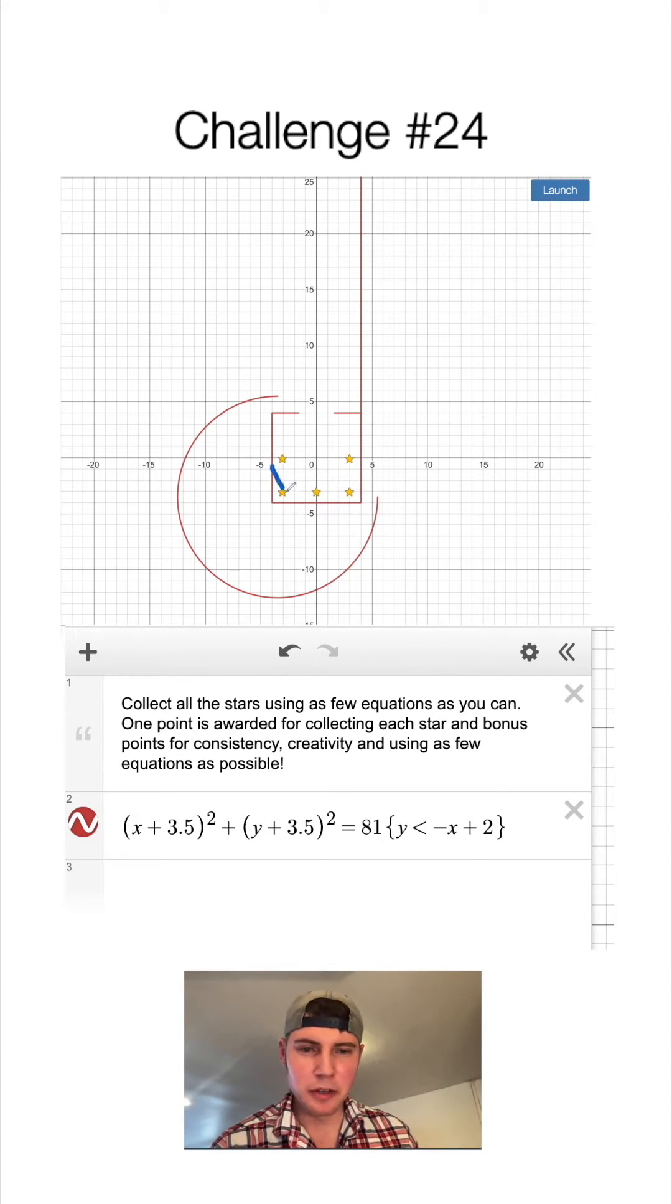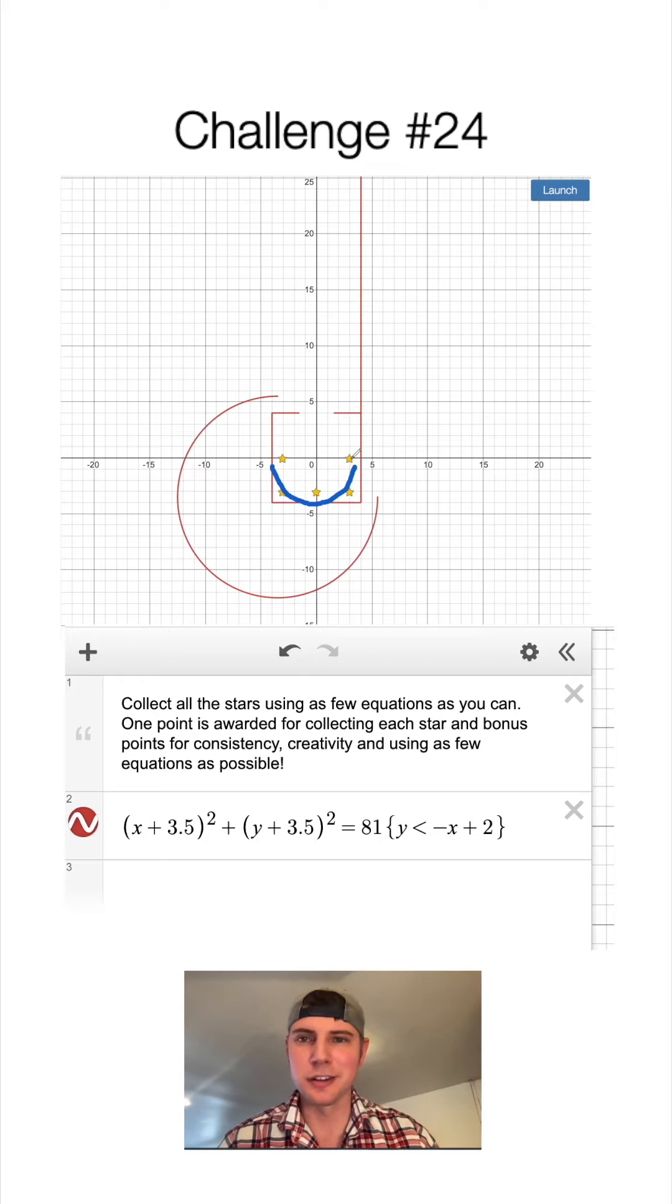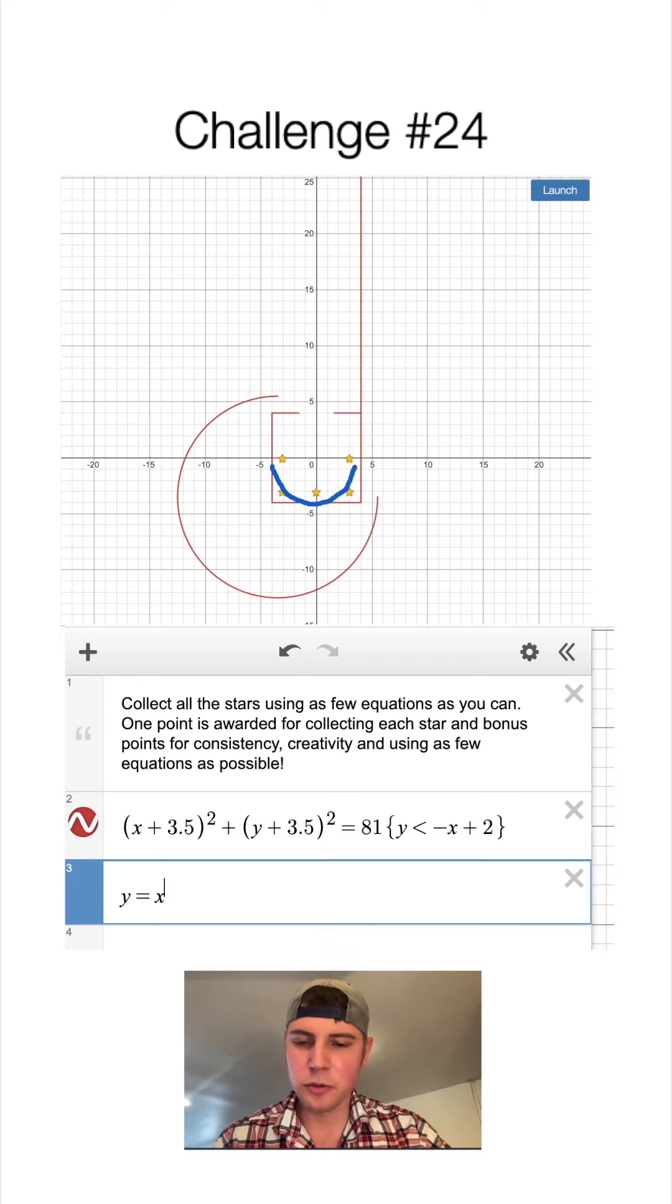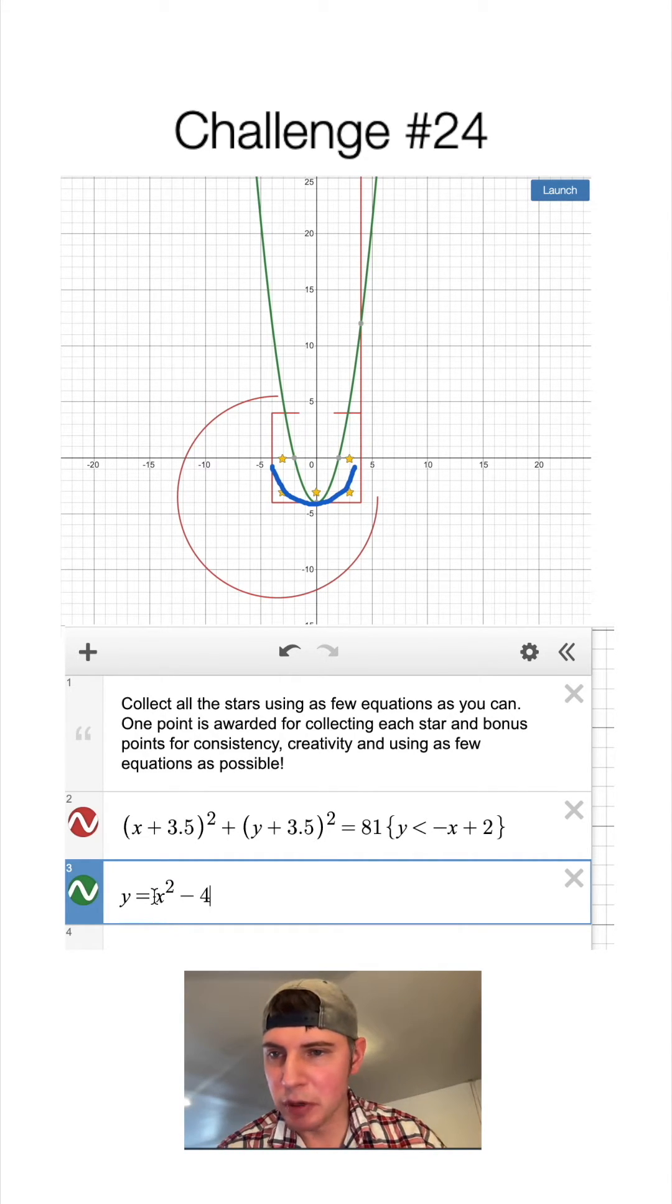I think maybe I can just put a parabola in here to kind of spin things around a little bit. So we'll say y equals x squared and then we'll bring it down. So on the outside here, we can say minus four. So then we want to make it a little bit wider.